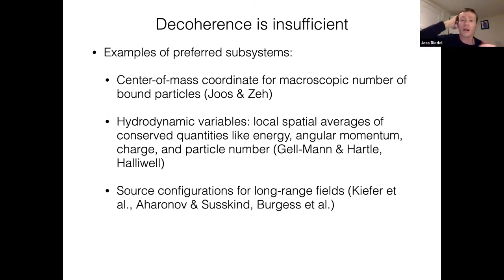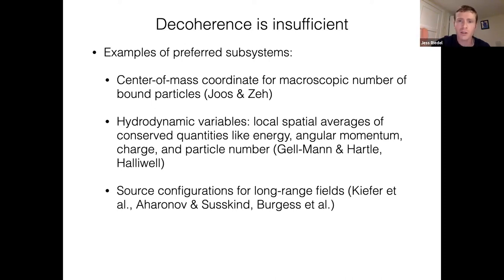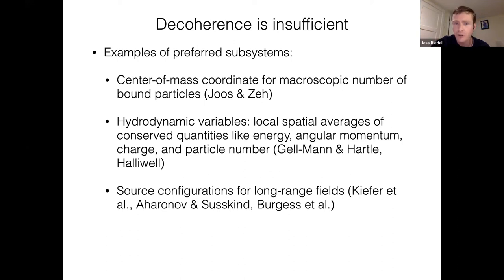One example is the center-of-mass coordinate for a macroscopic number of bound particles — particles chemically bound to each other. Each atom has its own coordinate, its own position and momentum, but that's not the thing that decoheres. Those atoms will be doing all sorts of things and be in quantum states and won't be acting classically at all. However, the center of mass coordinate — a kind of summary variable — will behave classically under certain assumptions. This is the famous example of Joos and Zeh.